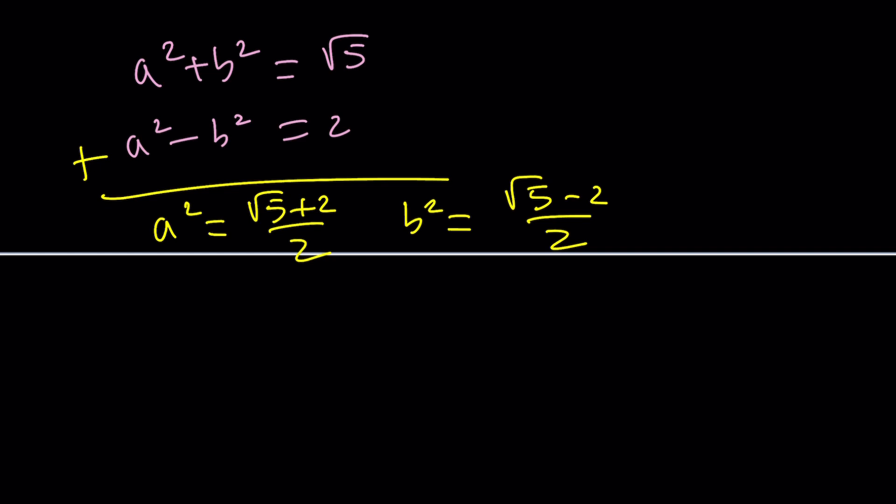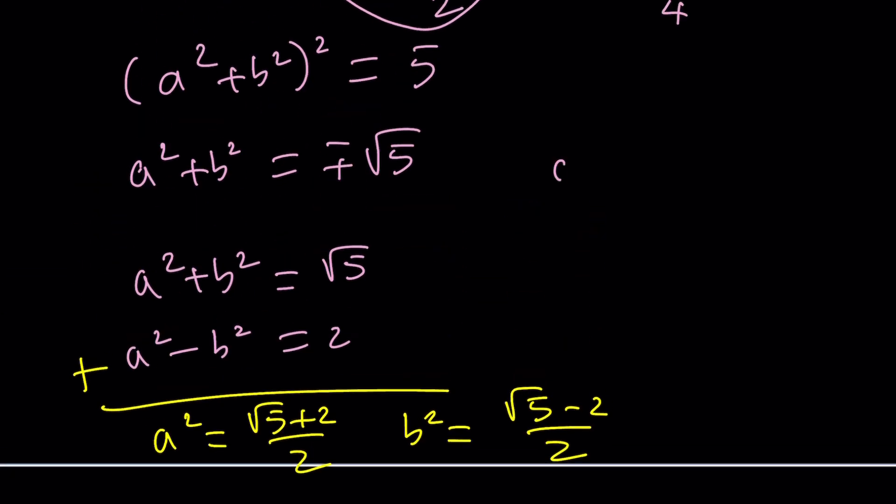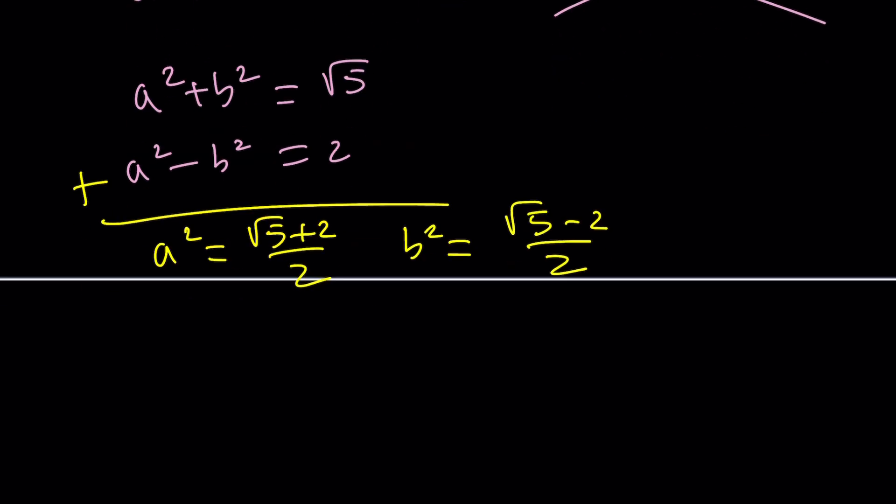These are valid solutions because A squared and B squared are both positive. They're supposed to be because they are real numbers. But if you go with a different scenario like A squared plus B squared is negative root 5, you realize that this is not possible for real numbers. So you can immediately discard it. So these are the only options.